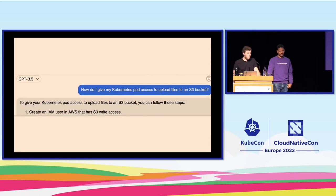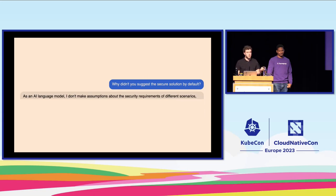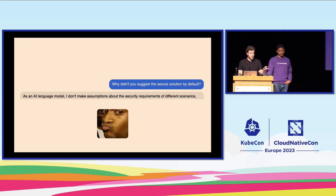Back to ChatGPT — it doesn't know about IAM roles for service accounts by default. But if you ask it how to make things more secure, it tells you to use IAM roles for service accounts, which begs the question of why it didn't say that from the start. It says it doesn't make assumptions about your security requirements. The key point is that AI is a great tool, but it was trained on a massive dataset that includes insecure things, and it tends to reproduce those insecure patterns.